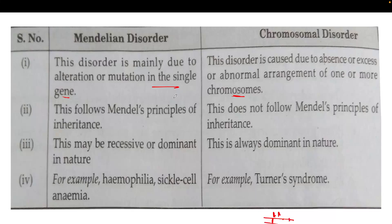If changes occur only at the single gene level, it is called a Mendelian disorder. Mendelian disorders generally follow Mendel's principle of inheritance, whereas chromosomal disorders do not follow Mendel's principle of inheritance. Mendelian disorders may be recessive or dominant in nature, while chromosomal disorders are always dominant in nature.